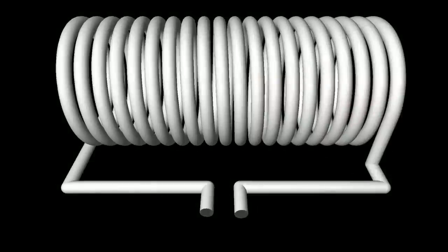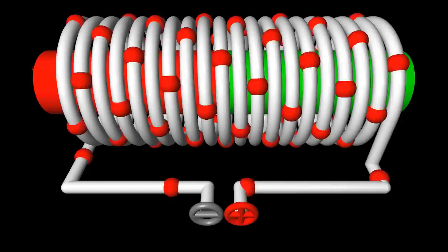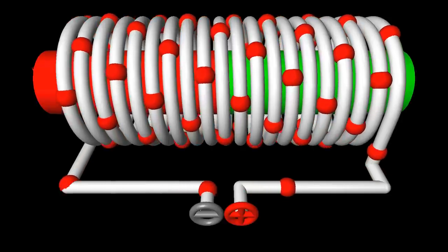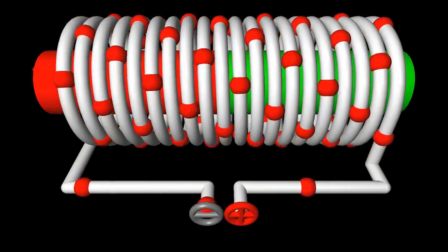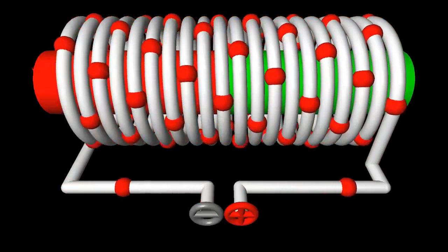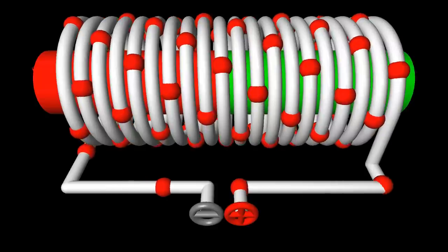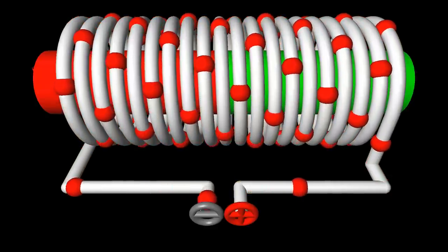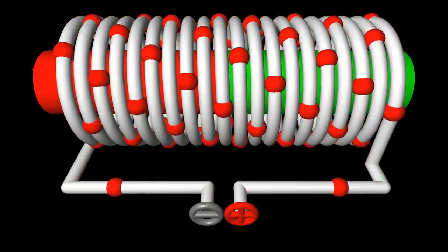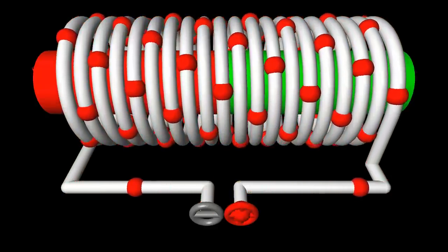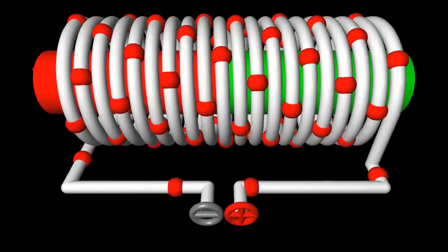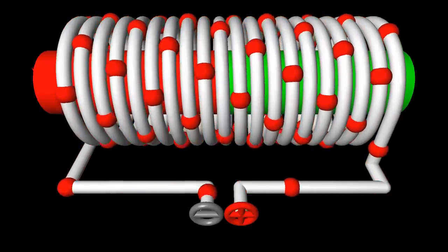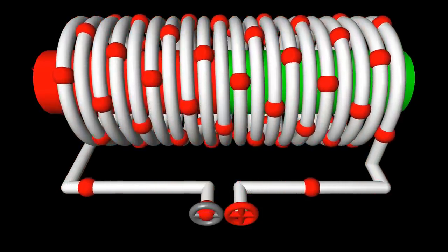The electromagnet consists of a large number of closely spaced turns of insulated copper wire. Similar to a bar magnet, a magnetic field with its poles at the ends of the coil is produced as soon as a current flows through the wire. The direction of the charged particle's movement is responsible for the polarity of the magnetic field surrounding the coil.